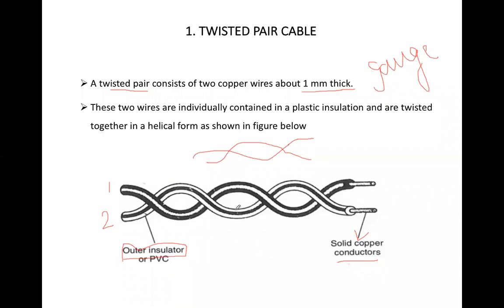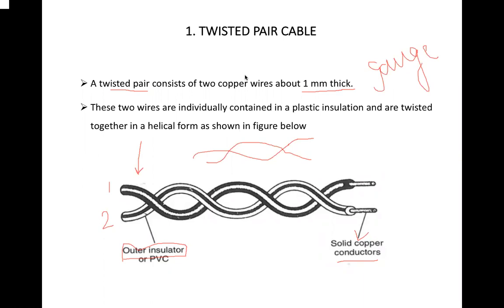To avoid short circuit and external noise, we use an insulator inside the copper. The conductor allows electricity to pass through it, while the insulator does not allow it to pass. So the twisted pair cable has a copper cable of around 1 mm thickness — also called the gauge — with an insulator PVC layer inside, and the cables are twisted in pairs.